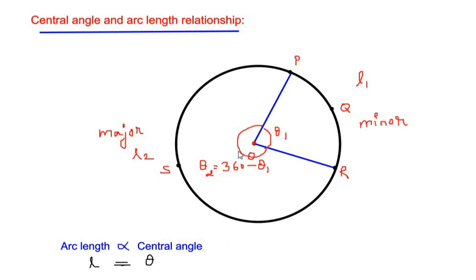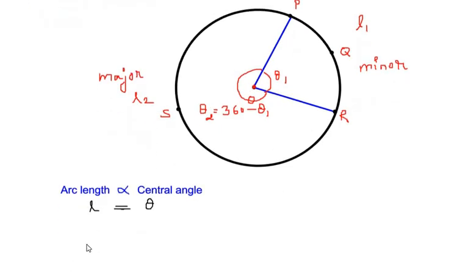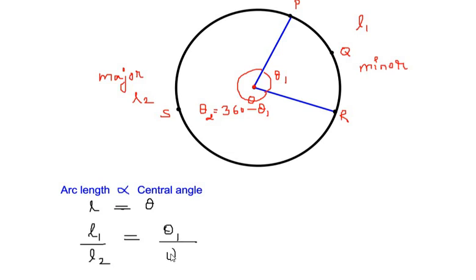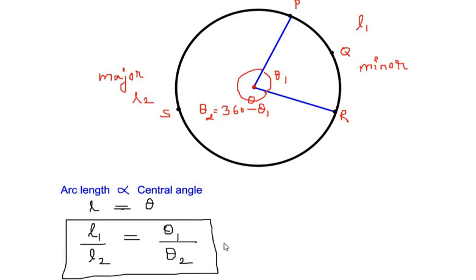Since we have two central angles and two arc lengths, we can make a ratio between the arc lengths and the central angles and write it as: l1 over l2 is equal to theta 1 over theta 2. We have now established a relationship between the arc length and the central angle.